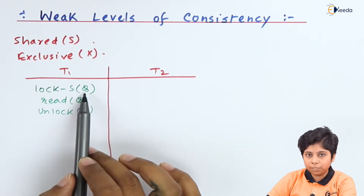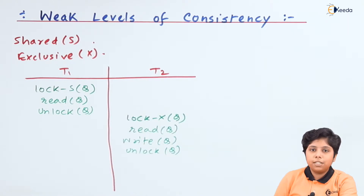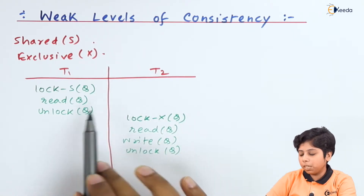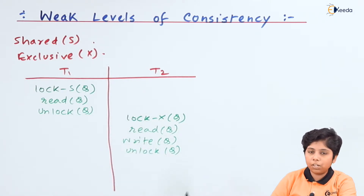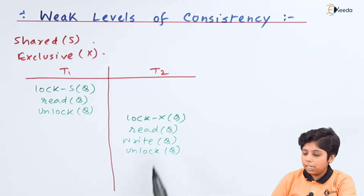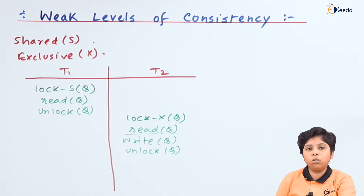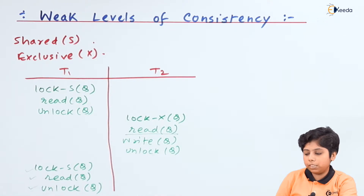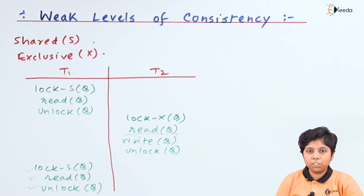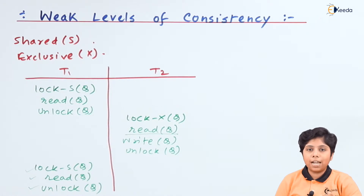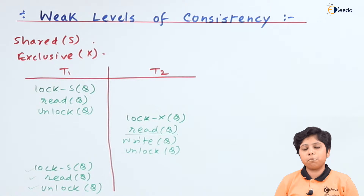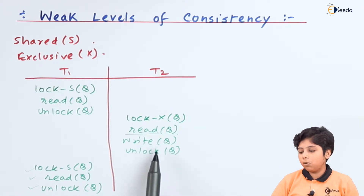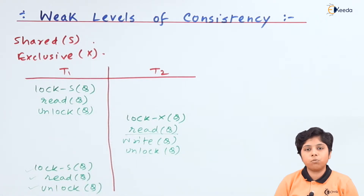For transaction T1, we first acquire a shared lock on data item Q, read it, then unlock it. Transaction T2 is performed after T1 has unlocked Q — it exclusively locks Q, reads it, writes it, and unlocks it, reading the old value that T1 had read. Then T1 again performs lock-S(Q), read(Q), and unlock(Q). This schedule is not serializable because transactions are not grouped together, and it is not repeatable read either.